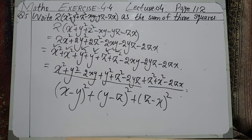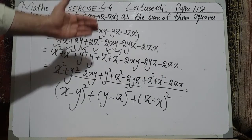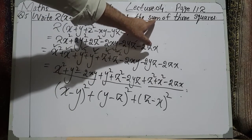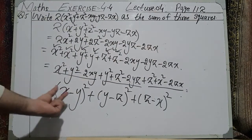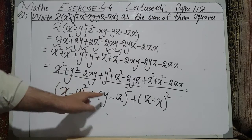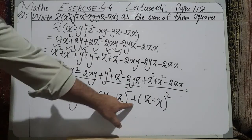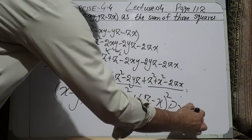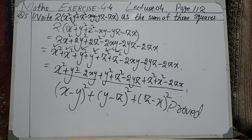As you can see, the question demanded that we simplify and convert the expression into the form of the sum of three squares. This is a square, this is a square, and this is a square — and their sum is what we have proved. And with this, Lecture Number 4 ends.